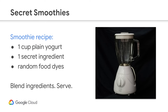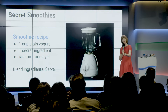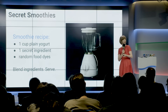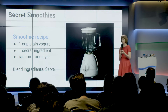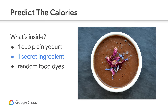For our example, we will be making smoothies. Every smoothie will have one cup of plain yogurt, one secret ingredient, and a bunch of random food dye so that you cannot tell what is in there. I blend it up, I serve it to you, and your goal now is to shout at me: what are the calories in this smoothie? Go!